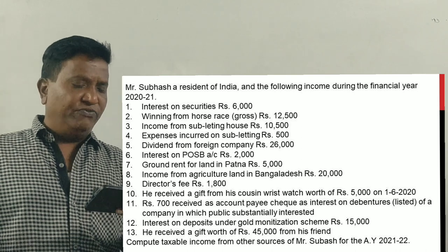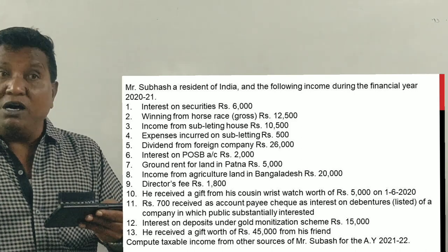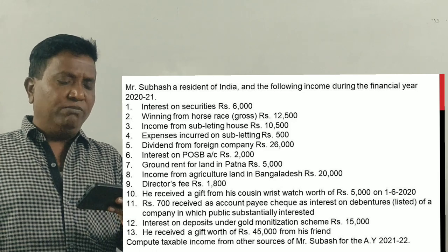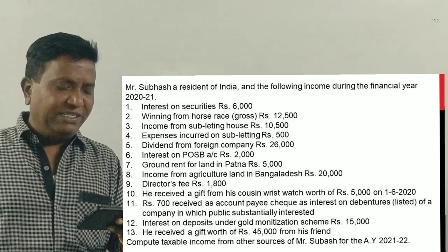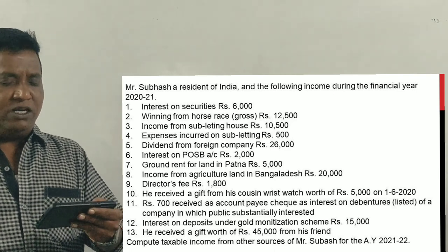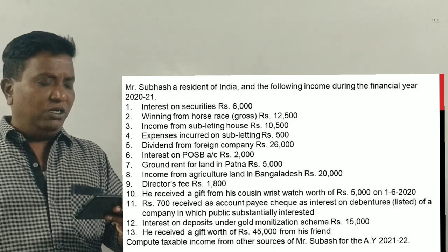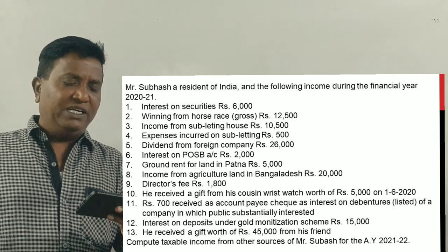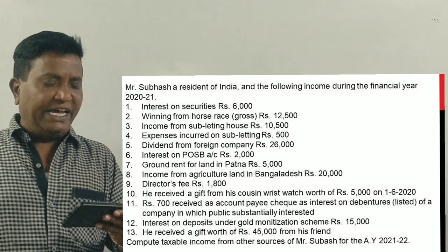Interest on securities Rs. 6,000. Winning from horse race gross Rs. 12,500. Income earned from subletting the house Rs. 10,500. Expenses incurred on subletting Rs. 900. Dividend from foreign company Rs. 26,000. Interest on POSB account Rs. 2,000. Ground rent on land received from Patna Rs. 5,000.